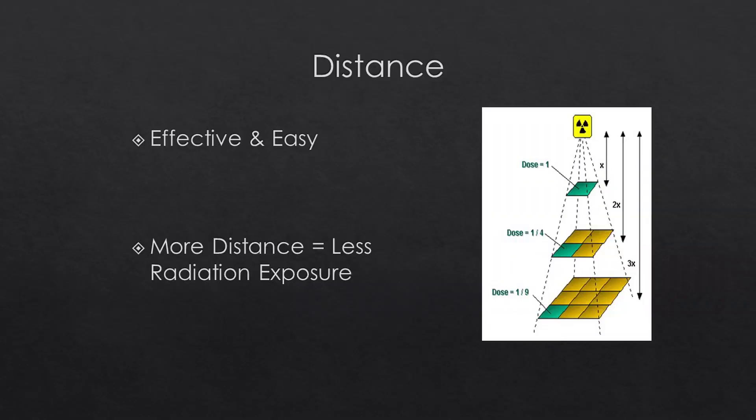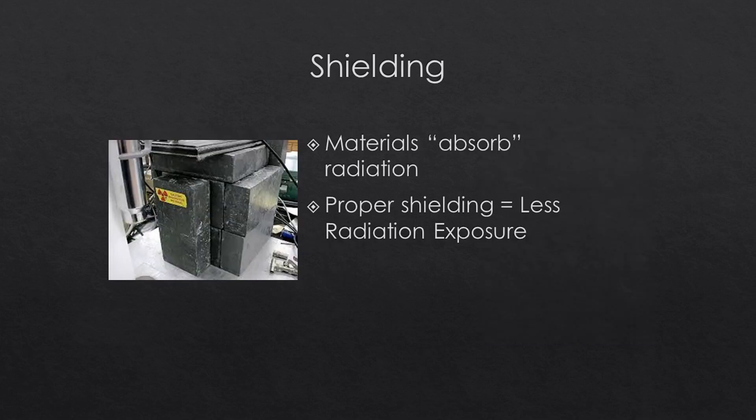Distance is one of the most effective and easy ways to reduce your radiation exposure — more distance equals less radiation exposure. For every unit that you increase the distance between yourself and a radioactive source, you reduce your radiation exposure by four. Shielding is a material that absorbs radiation, and proper shielding means less radiation exposure.